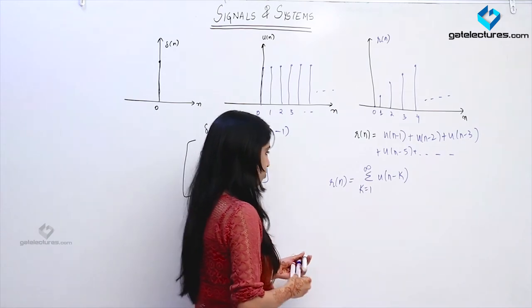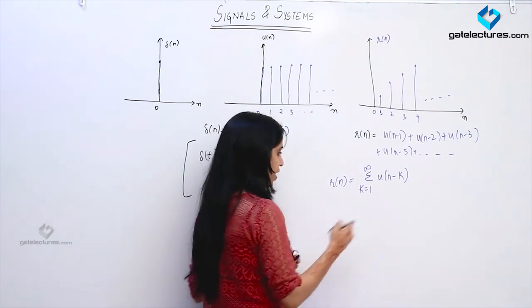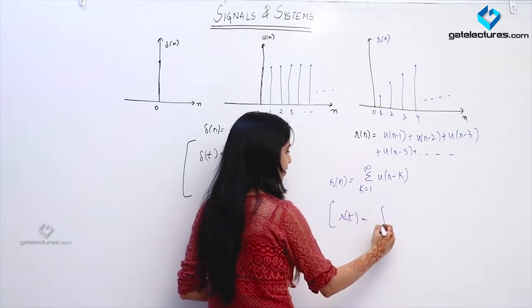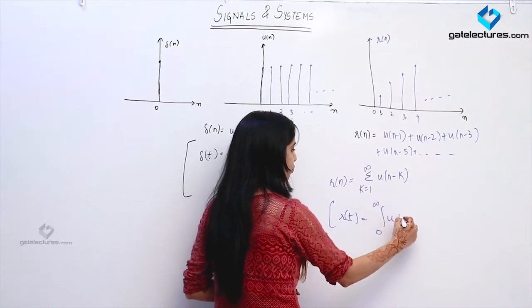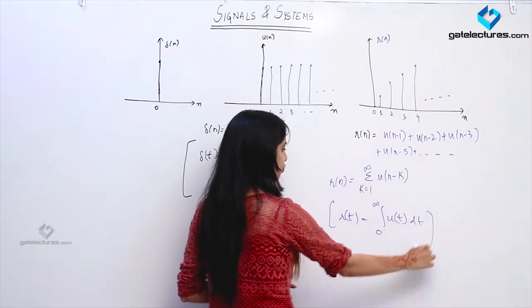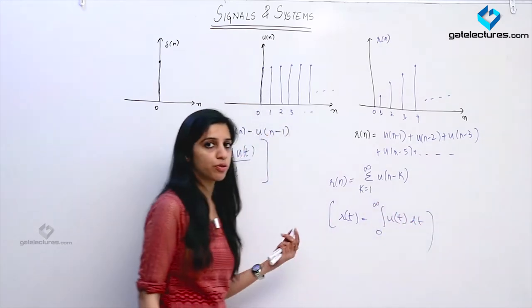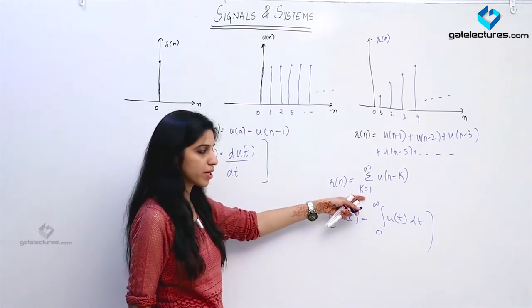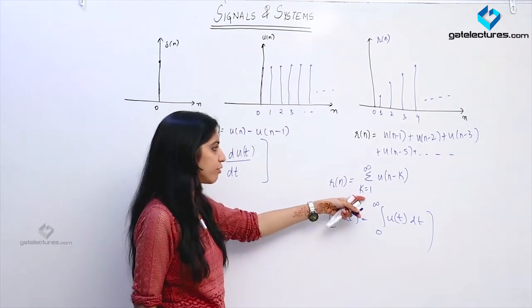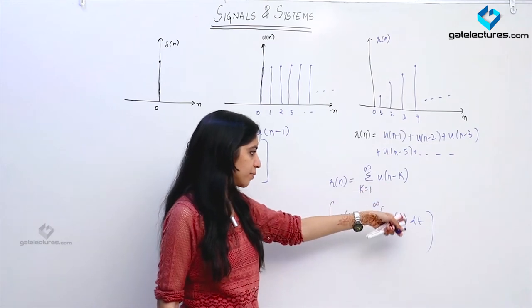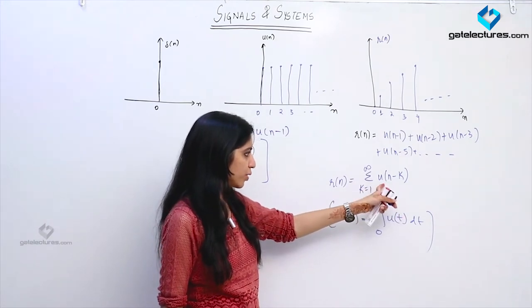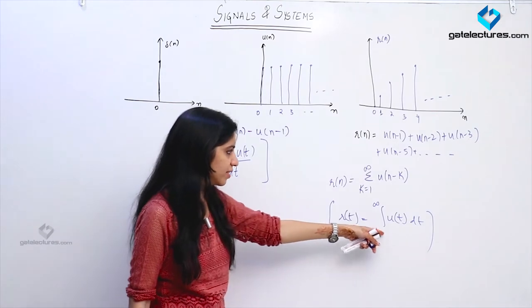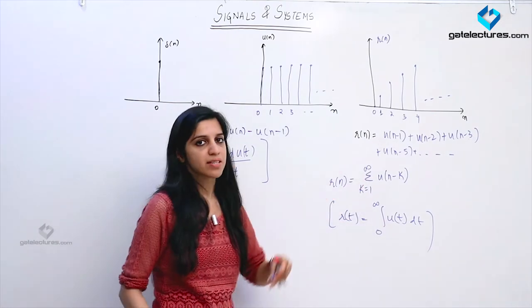In the continuous time domain, r(t) was the integration of u(t) from 0 to infinity. Here, only the limits have changed — we have k from 1 to infinity, and in place of t I am putting n minus k. It is the same kind of thing; we just replace integration with summation.